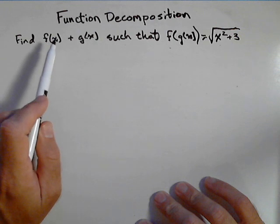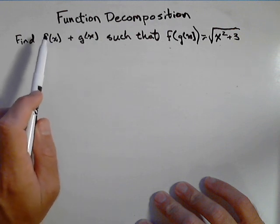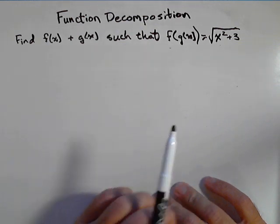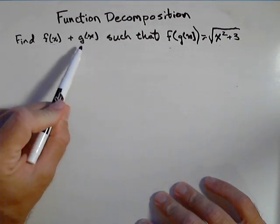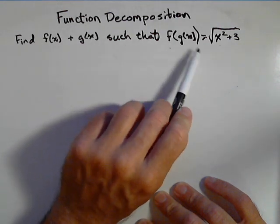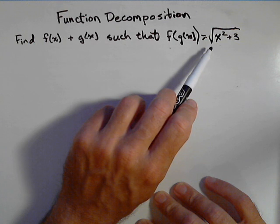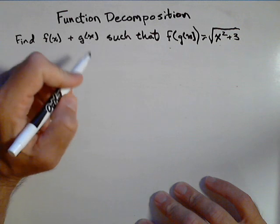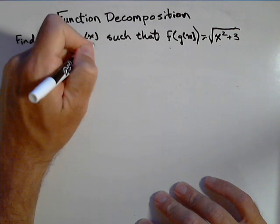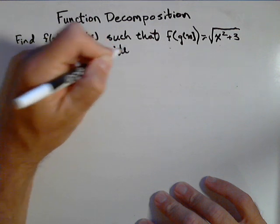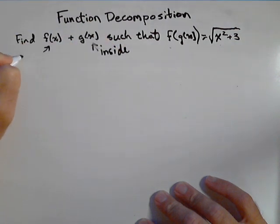Now, the big thing here is we're basically pulling apart a composition as opposed to putting one together like we usually do in other problems. So we're gonna identify two functions that when g of x is put into f of x, we get the resulting function. We're gonna identify an inside and an outside. Based on this notation, g of x is on the inside and f of x is on the outside.